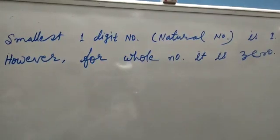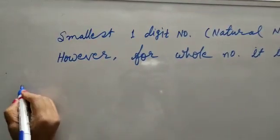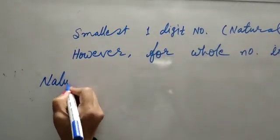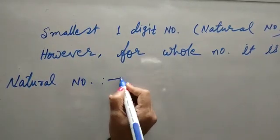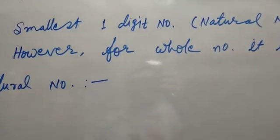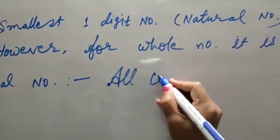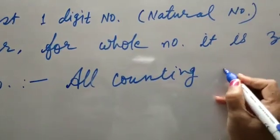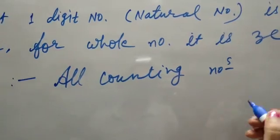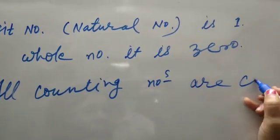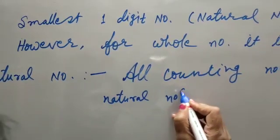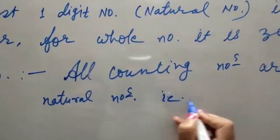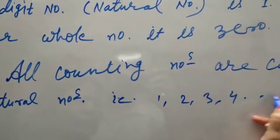What is natural number and what is whole number? Natural number: all counting numbers are called natural numbers. That is one, two, three, four and so on.